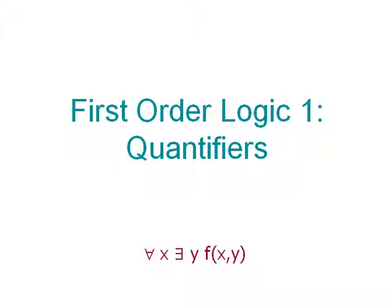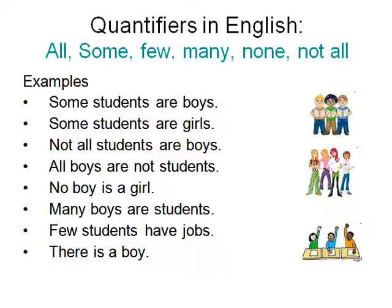This talk is about quantifiers. We have already seen propositions in logic, and propositions allow us to talk about things as they are. What if there are too many objects to talk about? We can't talk about each object by naming each one, and when you can't name them, you have to use quantifiers. This is our lecture on first order logic using quantifiers. We will get into higher order logics later on. So what are quantifiers?